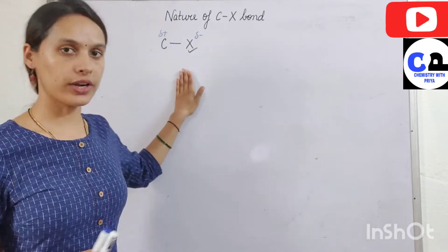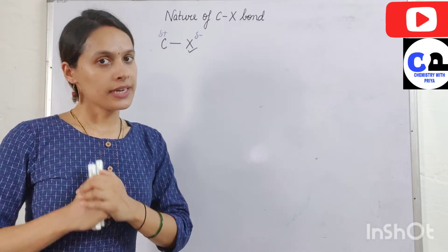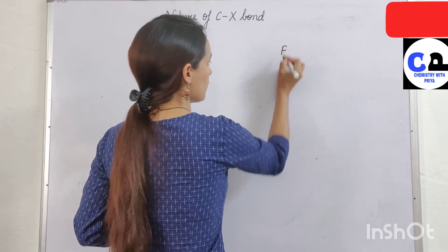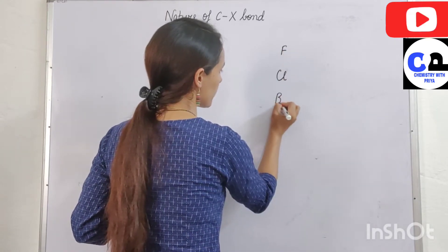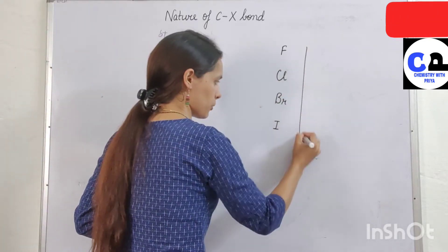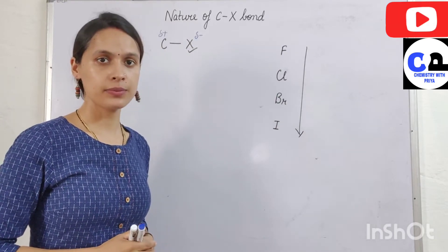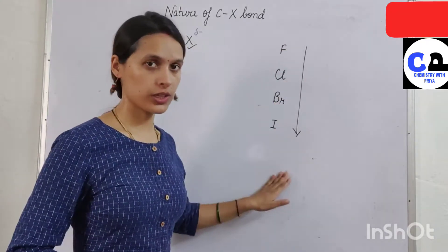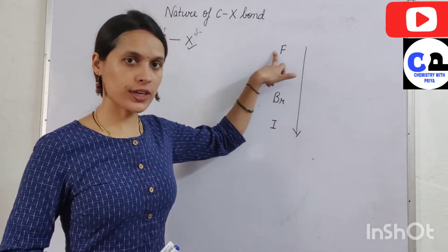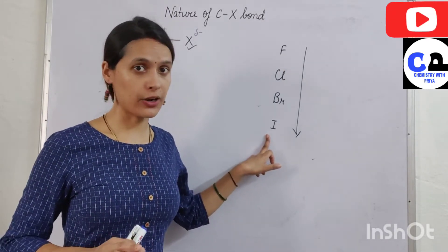This bond is a polar covalent bond. Now we have four halogens: fluorine, chlorine, bromine, and iodine. When we move down the group, electronegativity decreases. It means the most electronegative halogen is fluorine, and the least electronegative halogen is iodine.